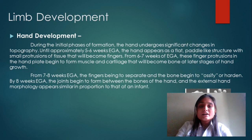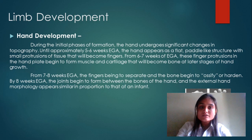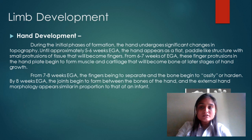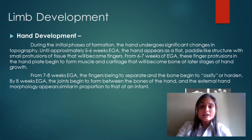During 5 to 6 weeks of pregnancy, hand development starts — first the hand has a paddle-like flat structure, then slowly tissue develops. At 6 to 7 weeks bones, muscles, and cartilage form. By 7 to 8 weeks the fingers are separated from the hand and the external morphology becomes a whole hand.